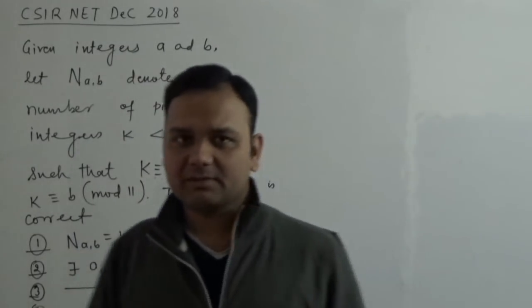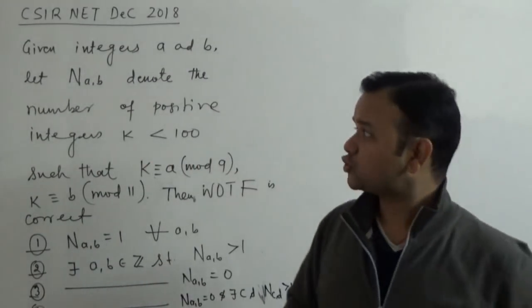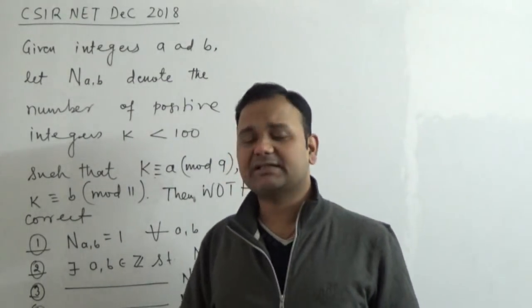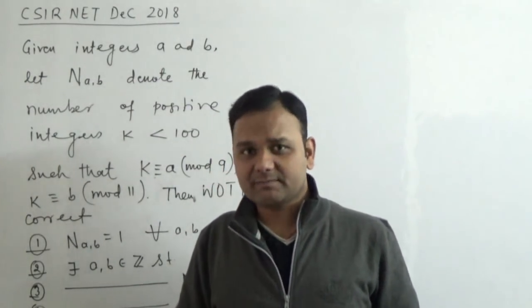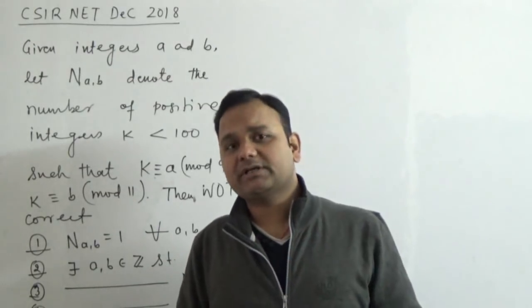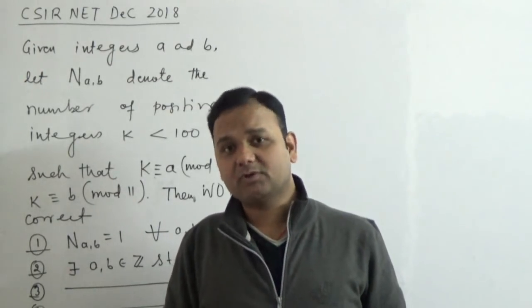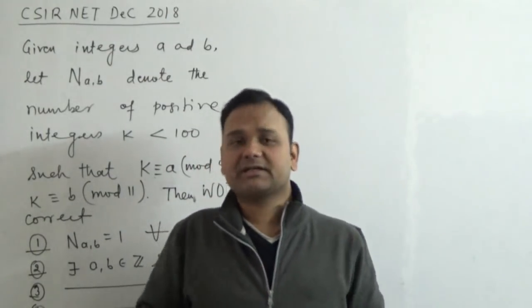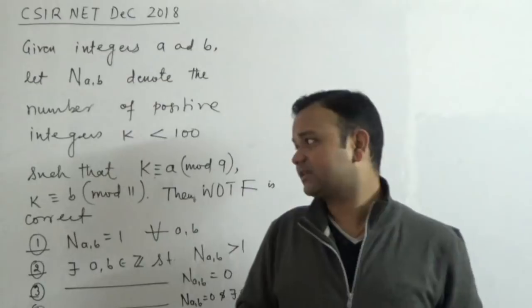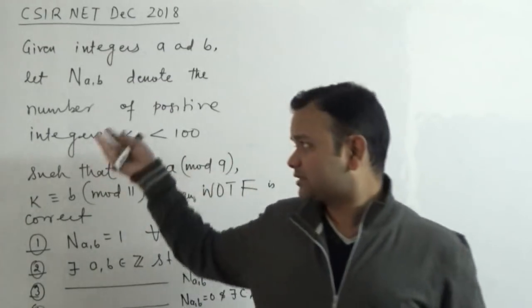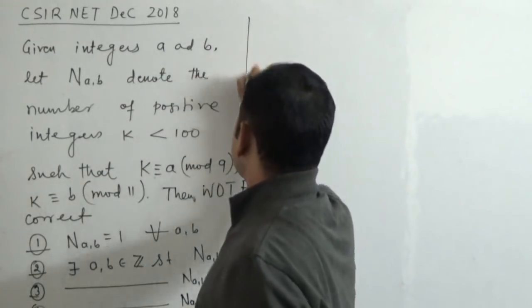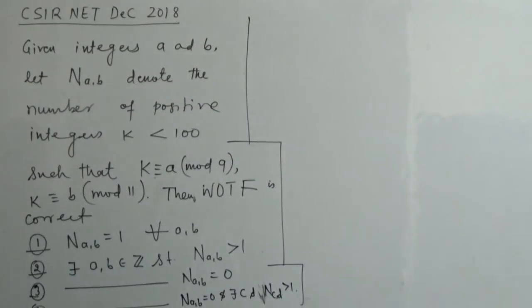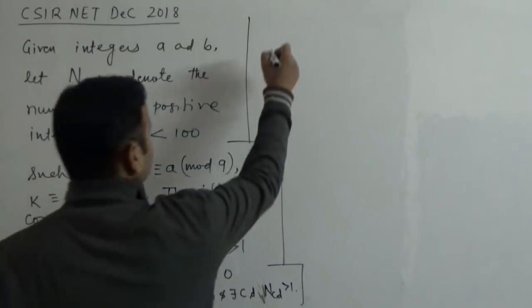This problem has been framed in a slightly twisted way, and most students might find it a little confusing. But trust me, there cannot be a simpler number theory problem than this. Let's understand how to approach this kind of problem — that's the important thing.